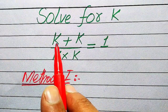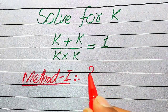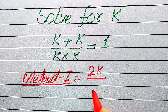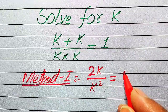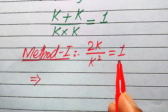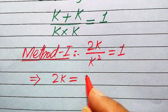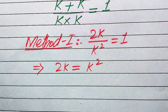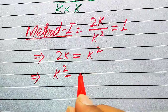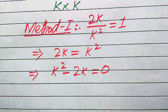Here you see that the two same variable terms are added to each other: k plus k becomes 2k. The two same variable terms multiplied by each other gives k multiplied by k, which becomes k squared. This whole equation equals zero. In the next step we move k squared to the right hand side, so 2k equals k squared.